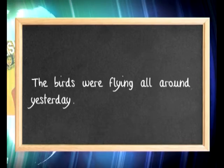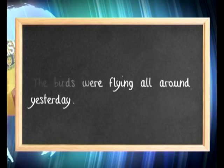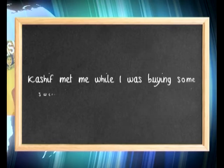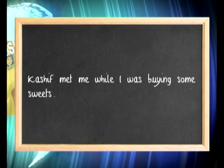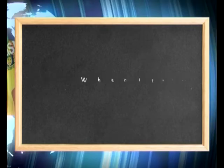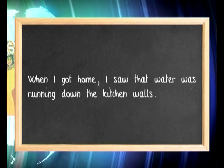We use this tense to talk about temporary actions and situations in the past. For example: 'Karshif met me while I was buying some sweets.' What was temporary was the buying of sweets. Another example: 'When I got home, I saw that water was running down the kitchen walls.' The water was running for a short time — when I went there, I stopped it. It was a temporary action, not a permanent one.